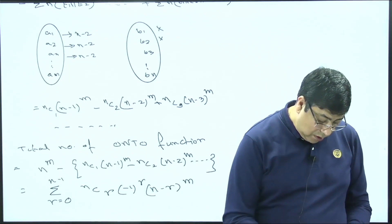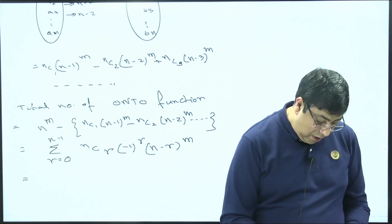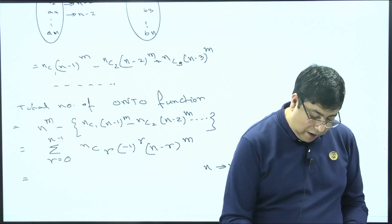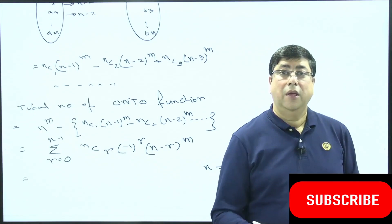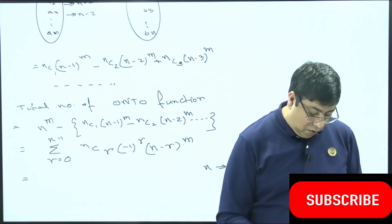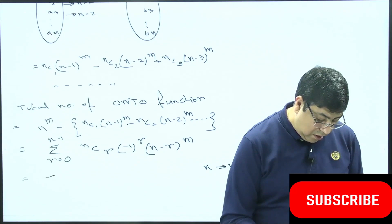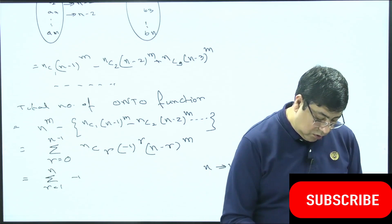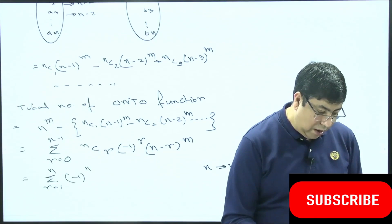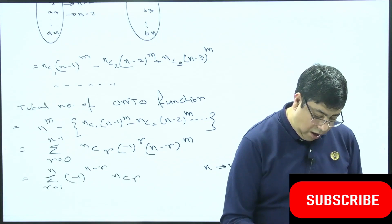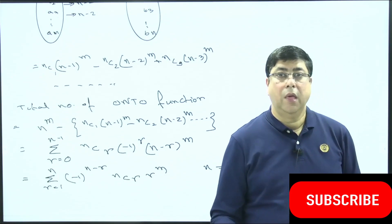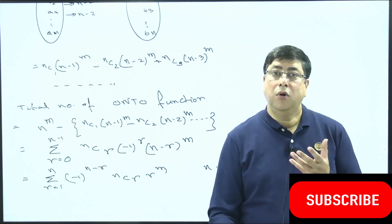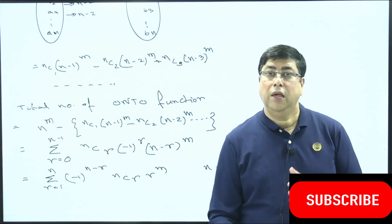This formula can also be written in another way. Replacing (n−r) with r, we get: summation of r = 1 to n of (−1)^(n−r) · nCr · r^m. Either formula can be used; both give the total number of onto functions from set A to set B.